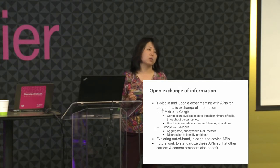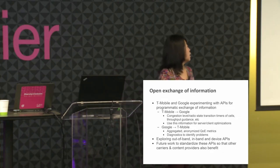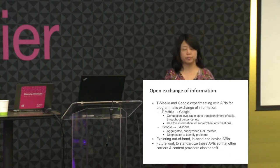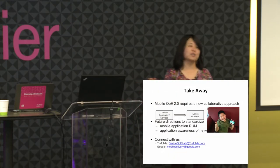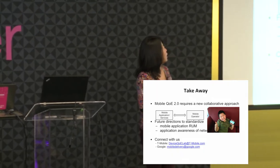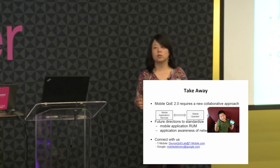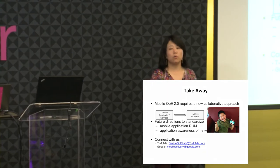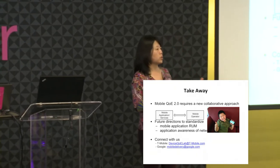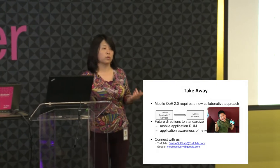This optimization requires the application to have information from the network side. T-Mobile is providing some information to Google to experiment with different optimizations, and Google is providing aggregated, anonymized YouTube quality of experience data to help us identify network problems. We are also exploring device APIs and network APIs to expose this information. The key takeaway is that mobile QoE 2.0 requires a collaborative approach between mobile operators and application or content providers.